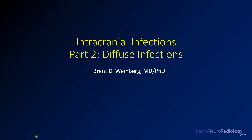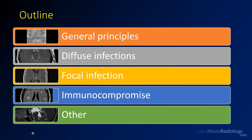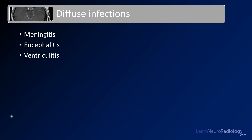For the second part of this series on intracranial infections, we're going to talk about diffuse infections. This is video number two on diffuse infections. The later videos in this series will talk about focal infections, special considerations in immunocompromised patients, and a few other considerations. For diffuse infections, the three main things to consider in the brain are meningitis, encephalitis, and ventriculitis. We'll talk about these one at a time and go through some of the key features of each.